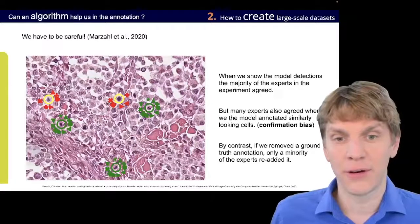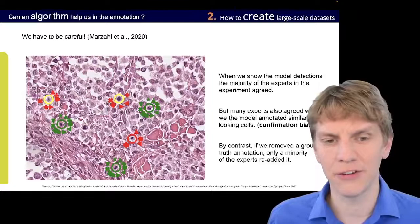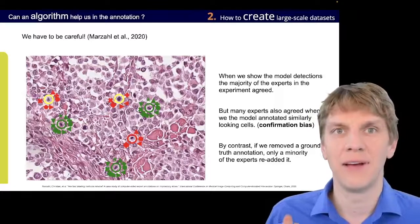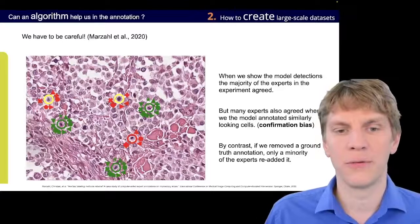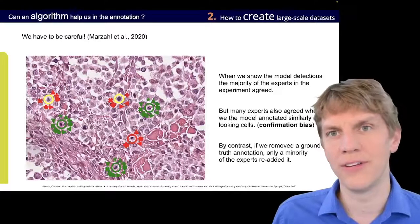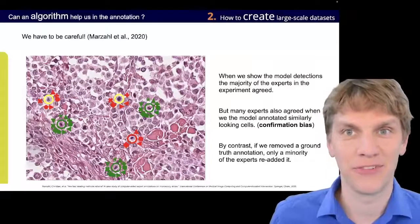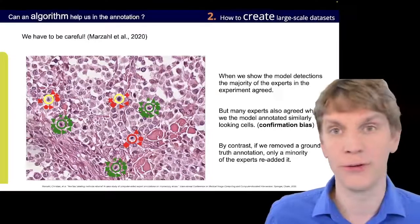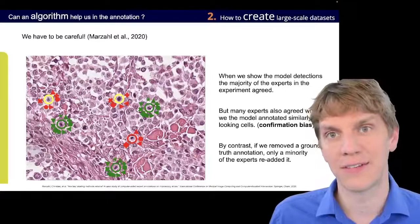Now, this also happens in the same case if we remove a ground truth annotation, which was in this case here. And here, this meant that, actually, because we removed the annotation, only a minority of the annotators re-added it. Well, so, we see that there's a significant risk of inducing bias in a kind of annotation experiment if the task is challenging enough.